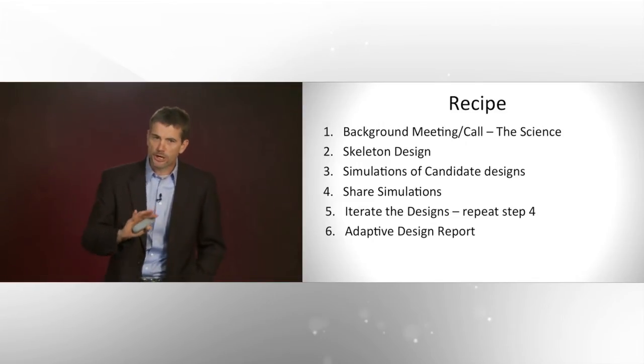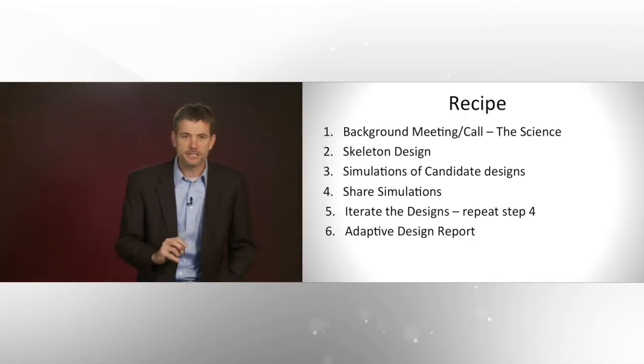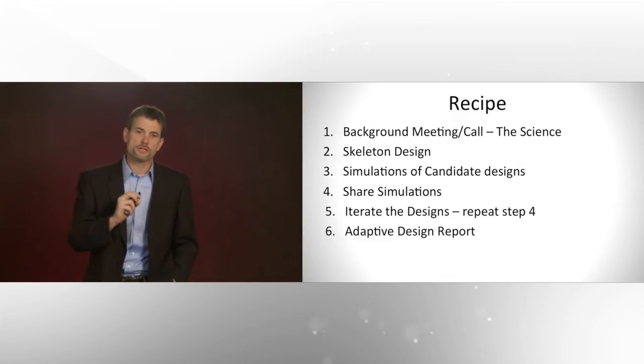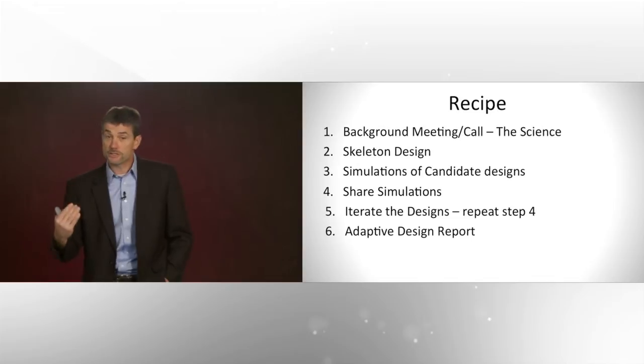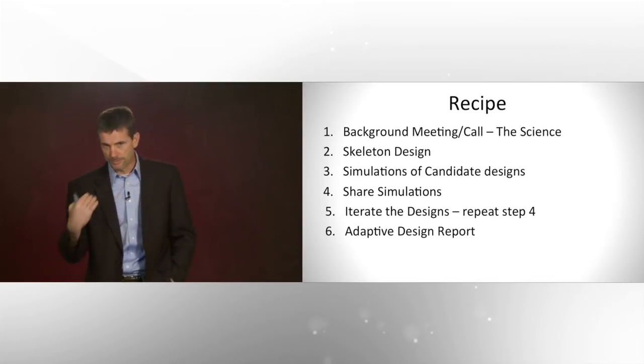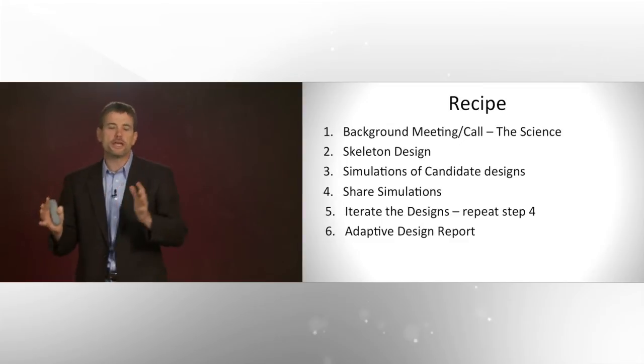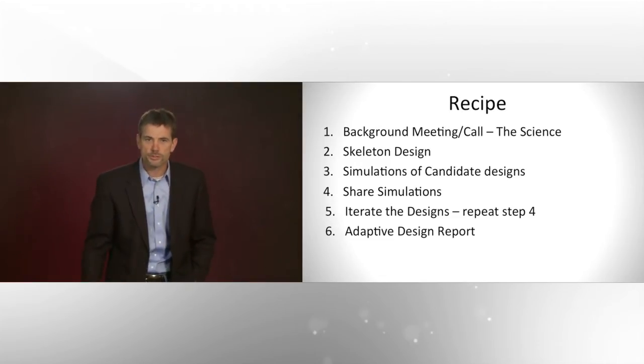So the recipe is very simple. There are six parts to this in order. If you go out of order, you can mess up your meal at the end of the day, your design at the end of the day. So it always starts with the science. This can be a series of meetings, a series of calls. But I think it's critical you get the science right. Everything else follows from the science. Then you create skeleton design or designs, simulate them, share your simulations. That part is critical. If you share them in one way or another, you change where the design goes. Iterate the design. You learned in the sharing that we should do this or that. This iterates and you continue until it's done. And then at the end, to finish it off, you create an adaptive design report.